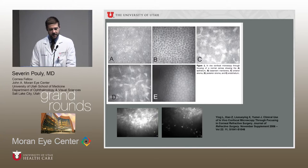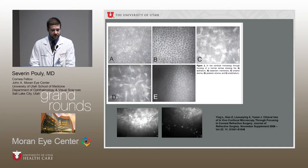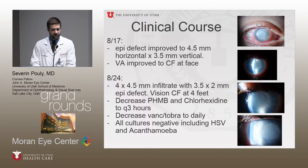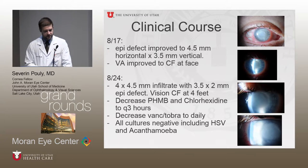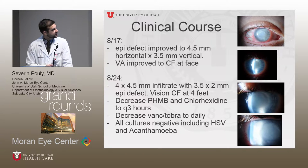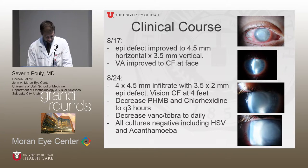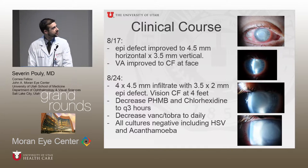She came back over the next two weeks. Her epithelial defect on August 17th had improved significantly from 7.5 by 7 to 4.5 by 3.5 millimeters, and her vision improved from hand motion to count fingers. By the 24th you can see the epithelial defect appears to be improving, with a little clearing in the periphery of the corneal stromal infiltrate.